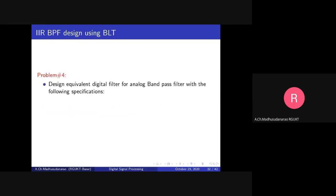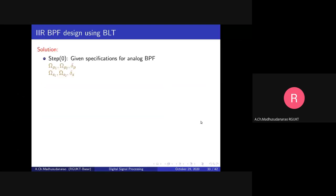Now let's look into IIR band pass filter design using bilinear transformation. Design an equivalent digital filter for an analog band pass filter with the following specifications: omega_p1 and omega_p2 are the passband cutoff frequencies in radians per second, delta_p is the minimum required passband gain, omega_s1 and omega_s2 are the stopband cutoff frequencies in radians per second, delta_s is the maximum allowed stopband gain, and fs is the sampling rate in samples per second.